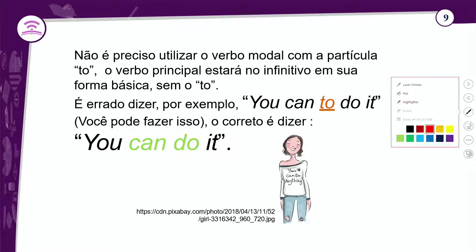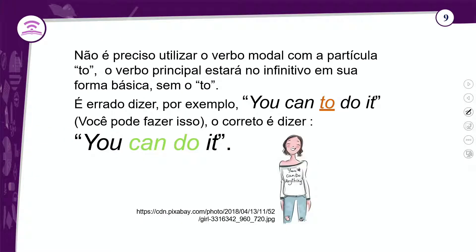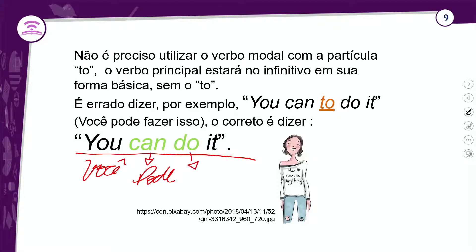O único que recebe o 'to' é o 'ought to'. O correto é 'you can do it' — você pode fazer — o verbo 'do' não está conjugado. O verbo modal não precisa do 'to' e o verbo principal fica na sua forma base.